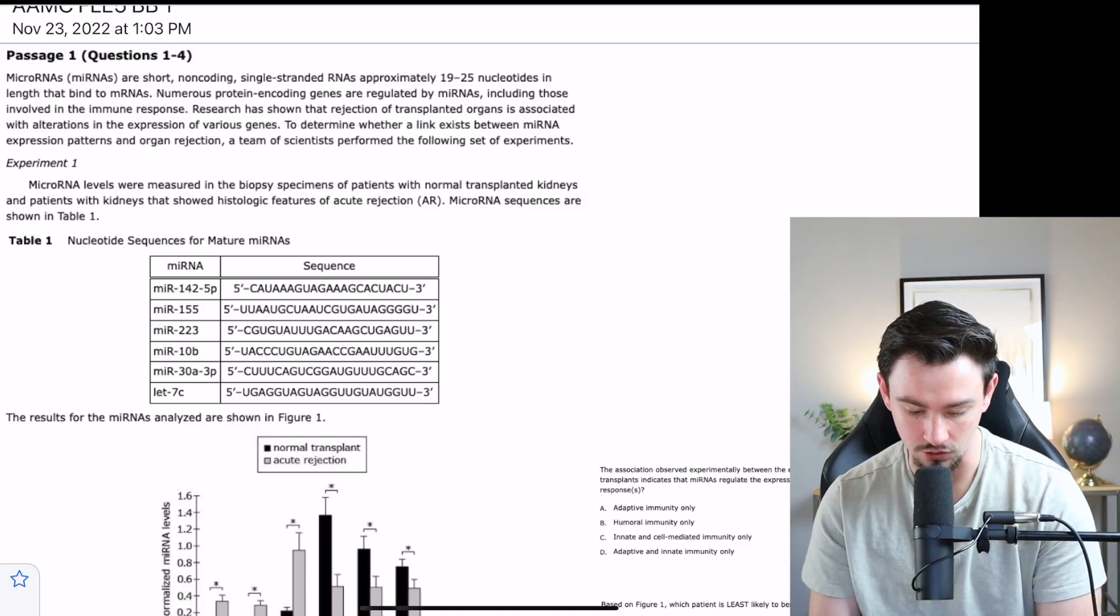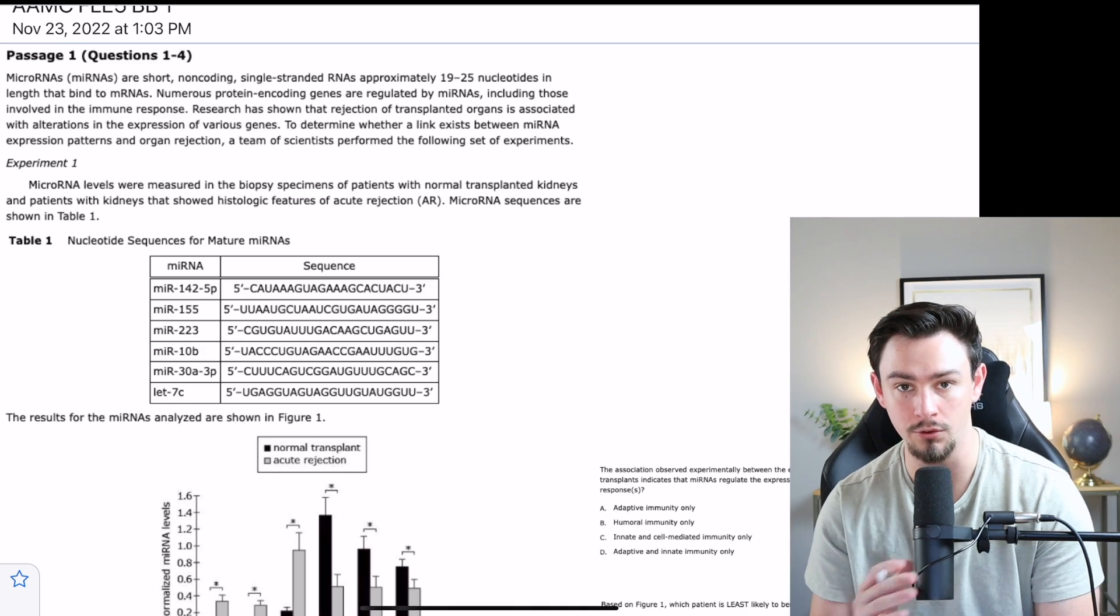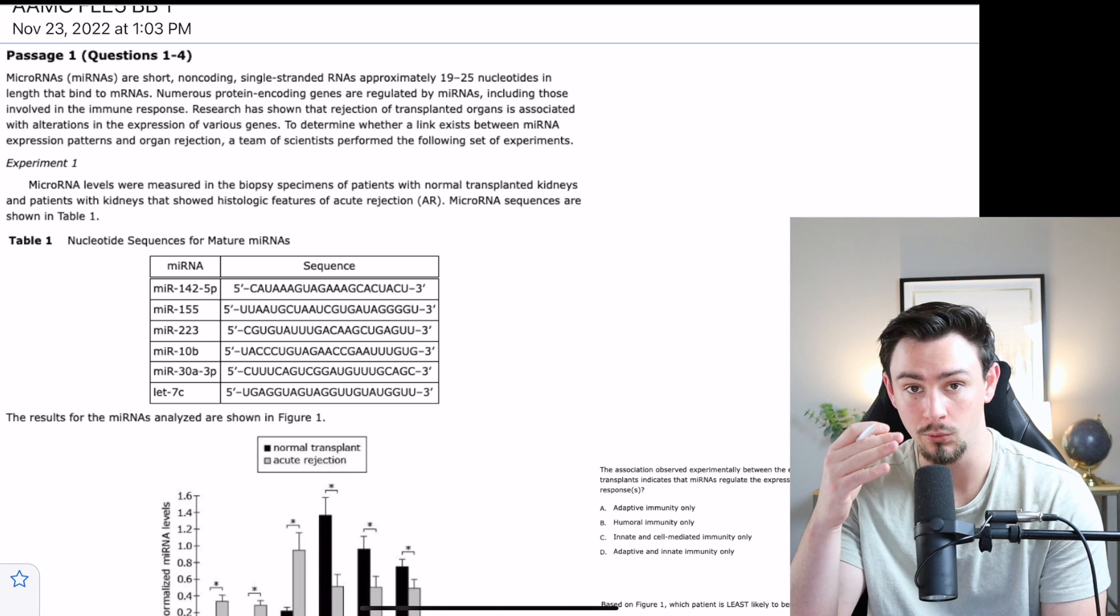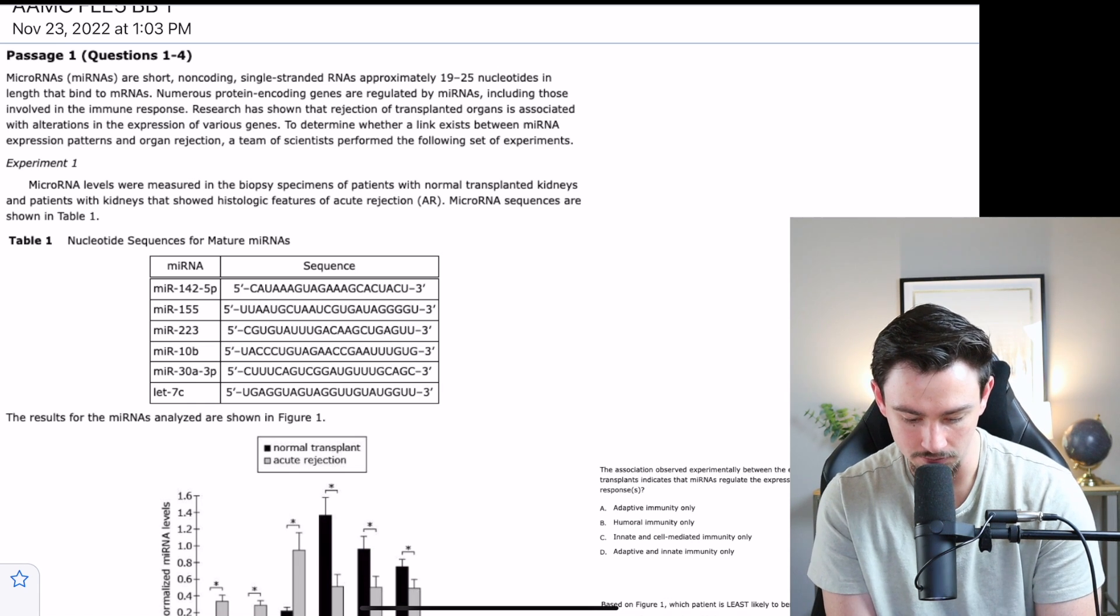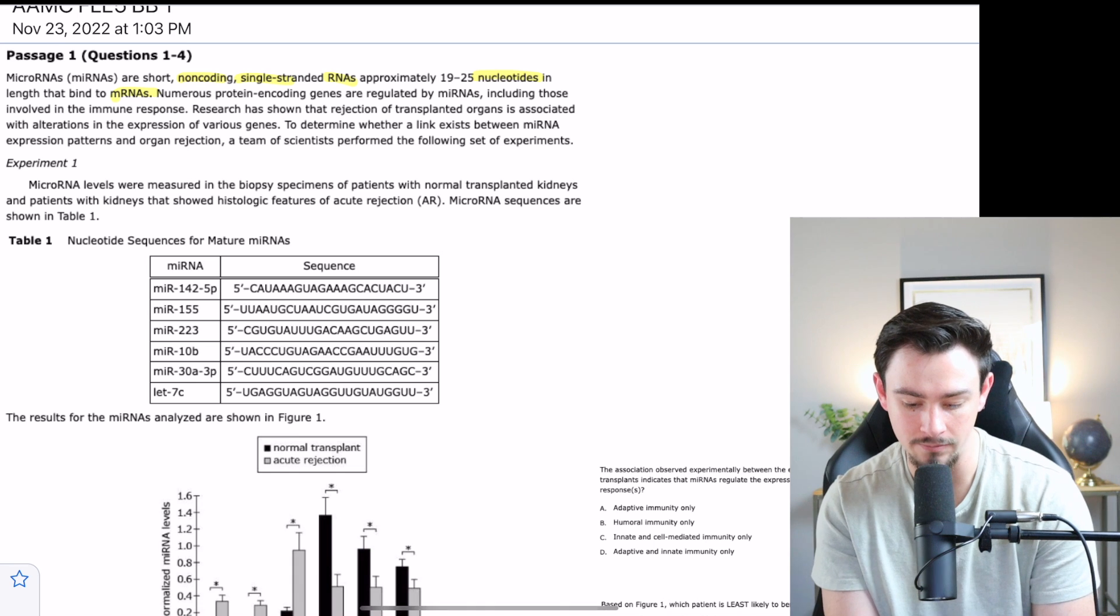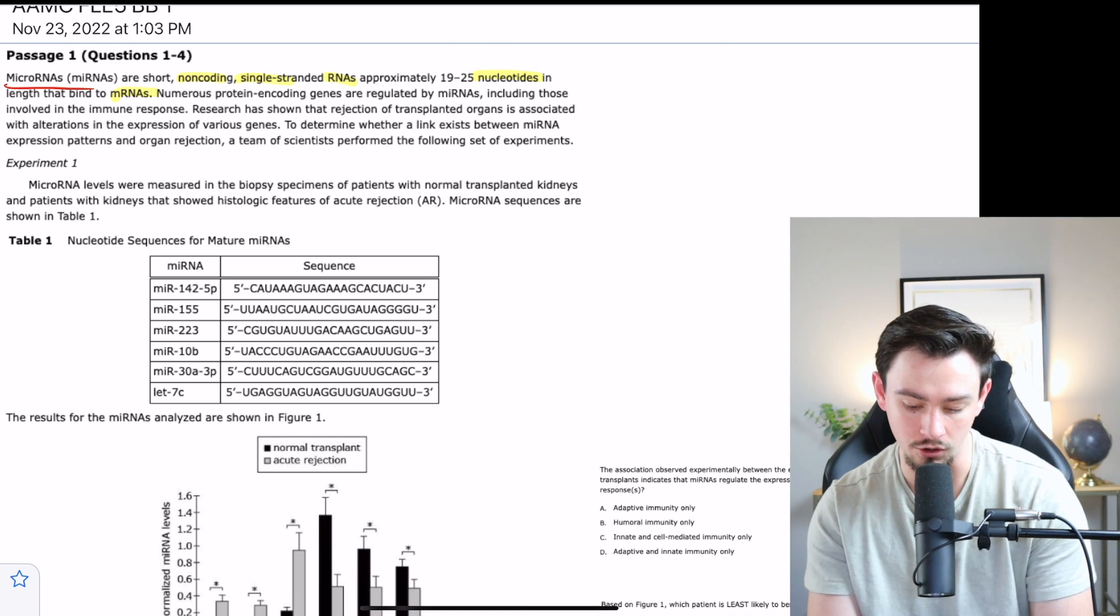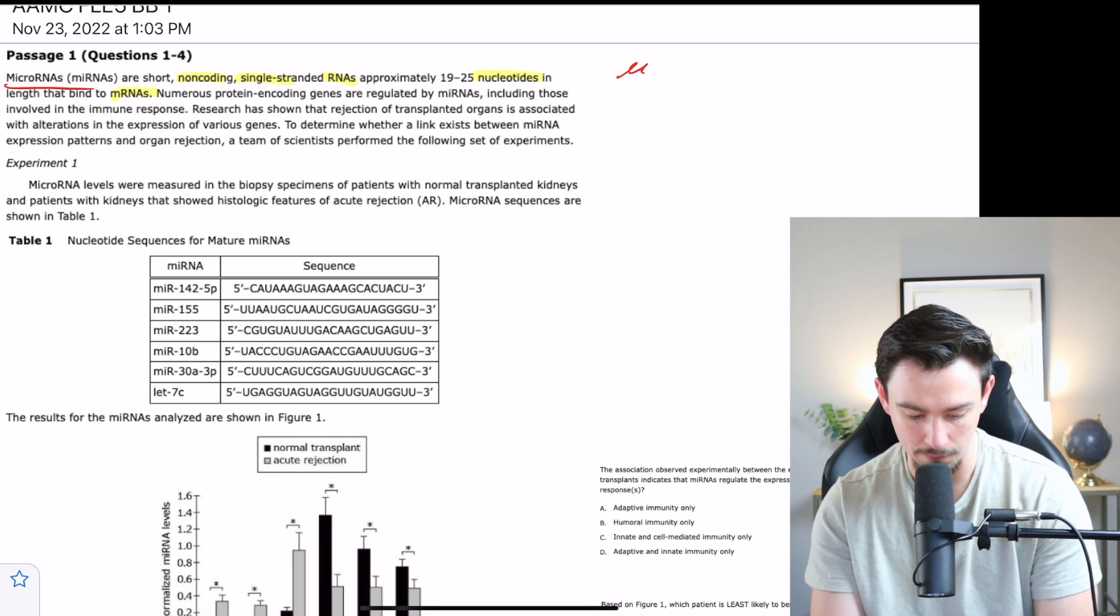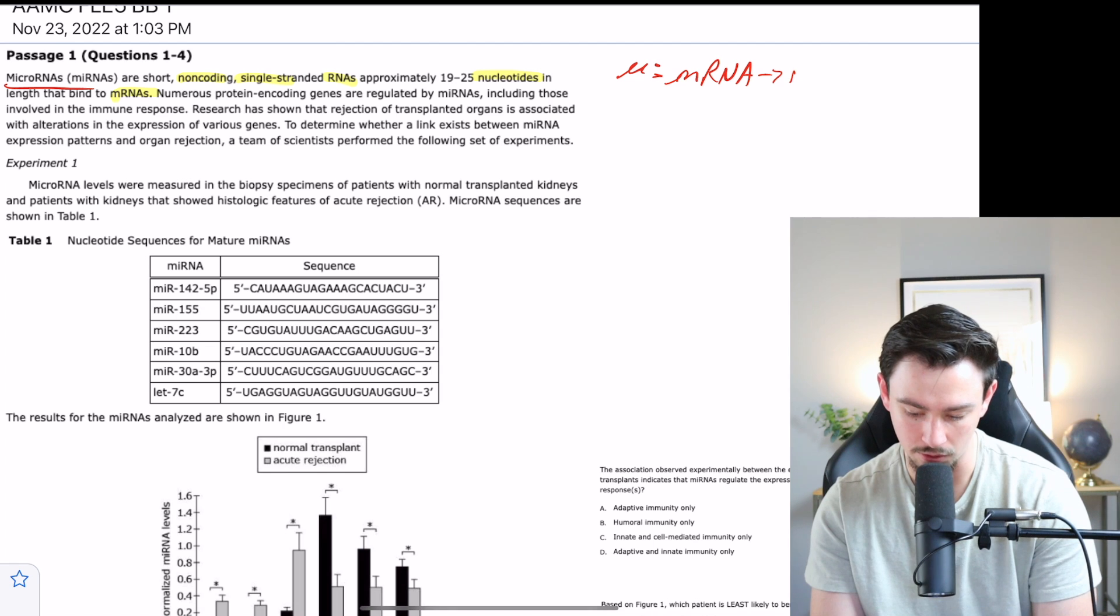This passage reads: microRNAs are short, non-coding, single-stranded RNAs, approximately 19 to 25 nucleotides in length that bind to mRNAs. Remember, if we're doing the flowchart method, this has already given us a ton of things we need to pay attention to. We highlight basic sciences and draw out relationships. Some of these basic sciences we're going to pay attention to: RNAs, single-stranded, non-coding, nucleotides, and then mRNA.